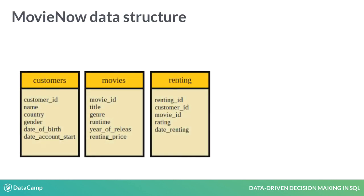The table Renting records all movie rentals. Renting ID is a unique identifier for each movie rental. The column Customer ID tells us which customer rented the movie and Movie ID tells us which movie the customer rented. The rating a customer gives after watching the movie is stored in the column Rating, which has values between 1 and 10, where 10 is the best rating. The final column is the rental date.